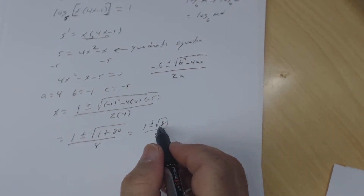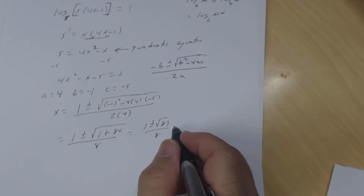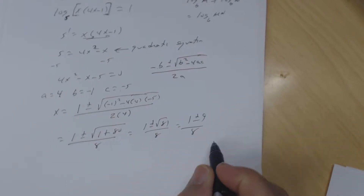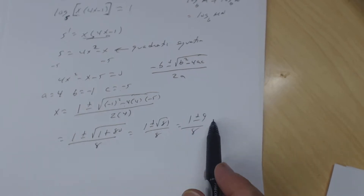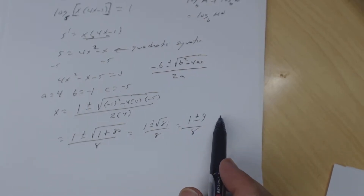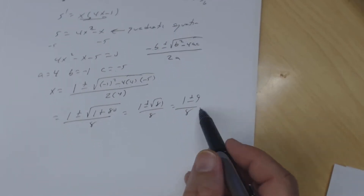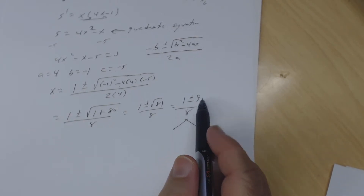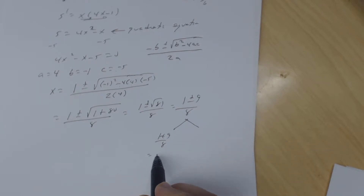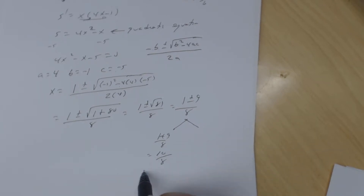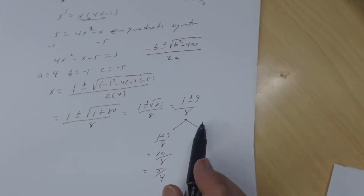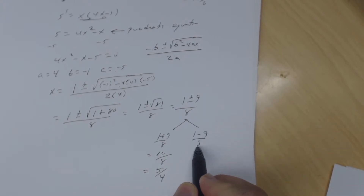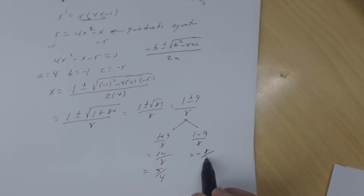Simplifying: 1 plus or minus the square root of 1 plus 80, all over 8 — that's the square root of 81, which is 9. So we get two rational solutions: 1 plus 9 over 8 equals 10 over 8, which reduces to 5 fourths; and 1 minus 9 over 8 equals negative 8 over 8, which is negative 1.